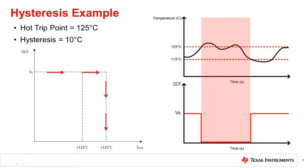The system begins to cool down to an acceptable level set by the hysteresis. When the temperature drops below 115 degrees Celsius, the output turns high, and the system is allowed to operate normally.